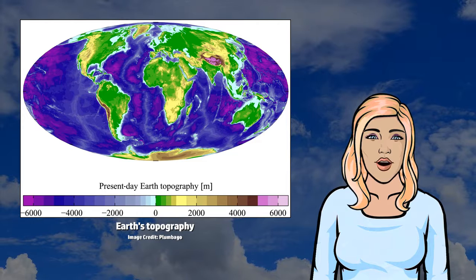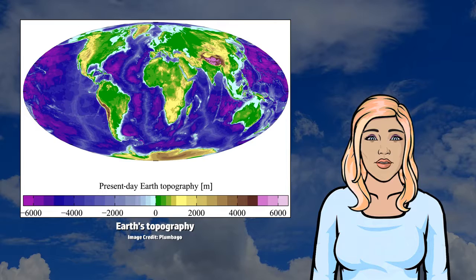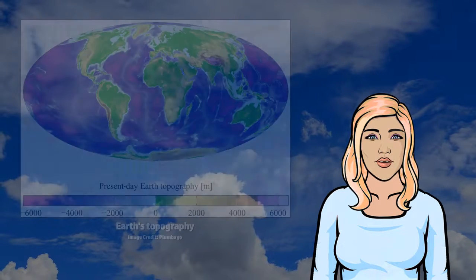Earth's interior remains active with a solid iron inner core, a liquid outer core that generates the Earth's magnetic field, and a convecting mantle that drives plate tectonics.